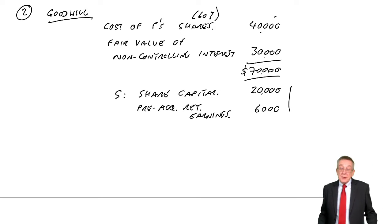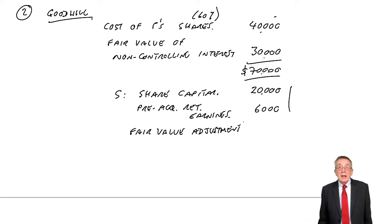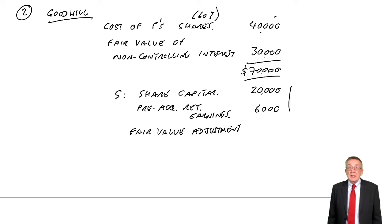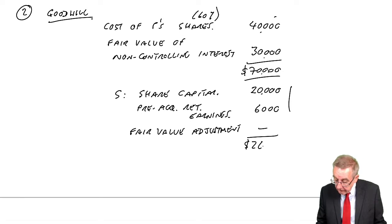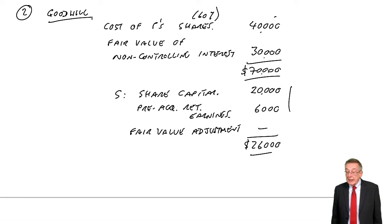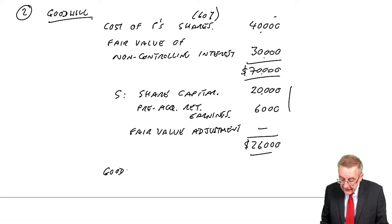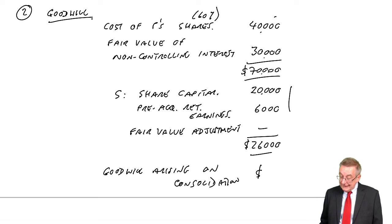We may have thought the assets were worth more — a fair value adjustment. We went through this in the previous chapter. If they said the assets were worth 10,000 more than the carrying value, we'd have added it on. Here, there's no mention of a fair value adjustment, so the carrying value is 26,000. Why did we decide S was worth 70,000? The difference is the goodwill arising on consolidation: 70 minus 26 is 44,000.